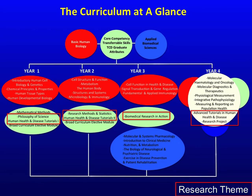This slide is called Curriculum at a Glance — I have flyers available at the stand. The structure is shown over years one, two, three and four, and all elements of the programme map to one of three thematic areas: basic human biology, applied biomedical science, and the development of core competencies — particularly related to research. To interact effectively with applied biomedical science you must set a good foundation in basic human biology.